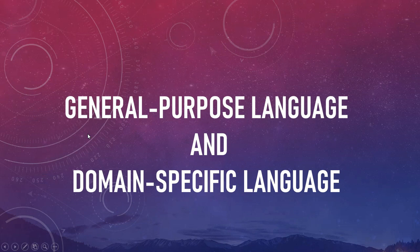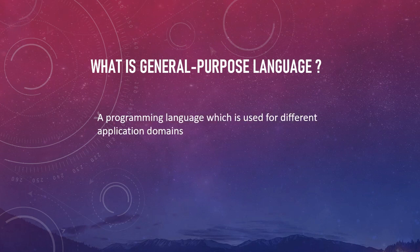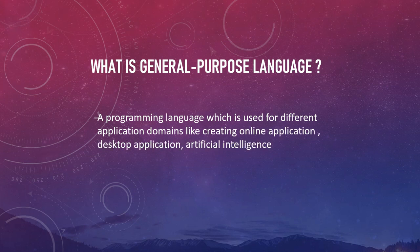A very common question is: what is a general purpose language and what is a domain specific language? A programming language which is used for different application domains — like creating online applications, desktop applications, artificial intelligence, and machine learning — is called a general purpose language.